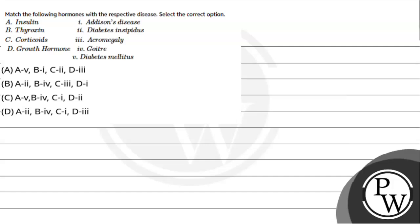Let's read the question. The question says match the following hormones with the respective diseases. We have been given four hormones to match: insulin, thyroxine, corticoids, and growth hormone. We need to match them with Addison's disease, diabetes insipidus, acromegaly, goiter, and diabetes mellitus.